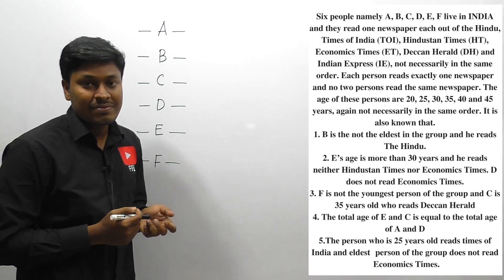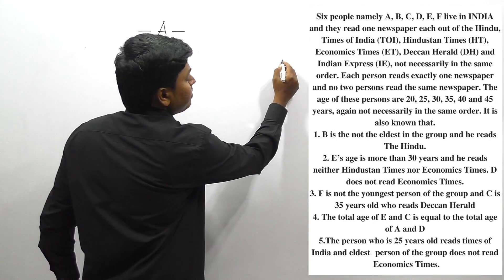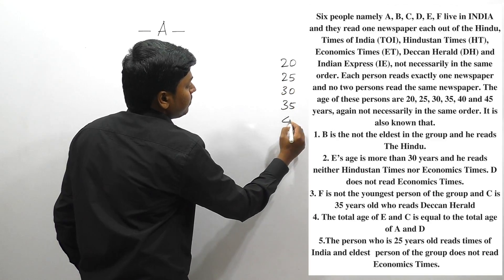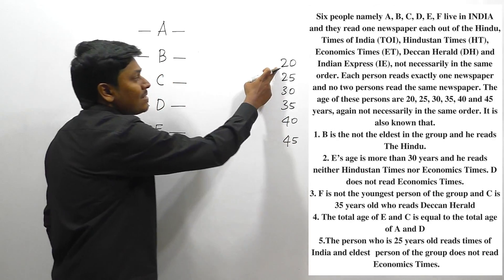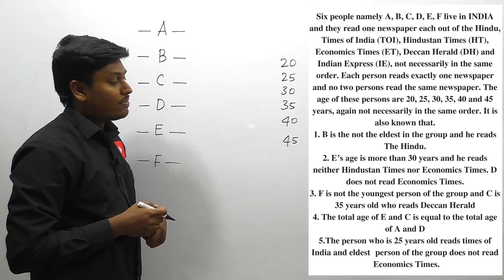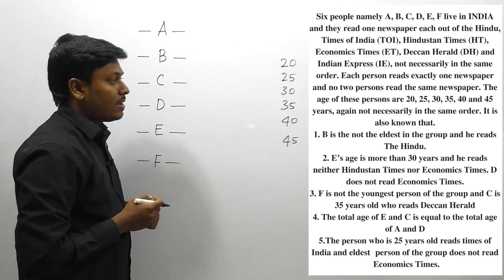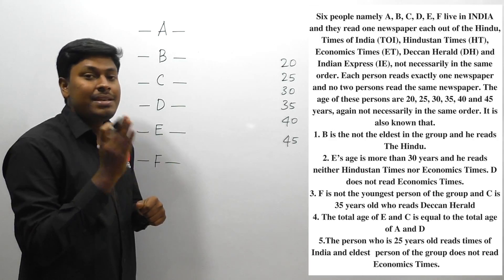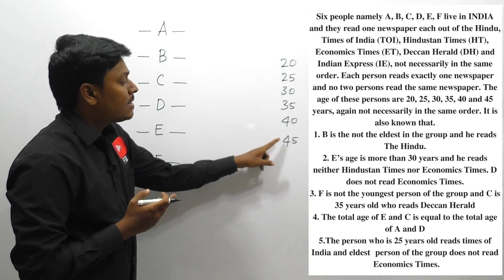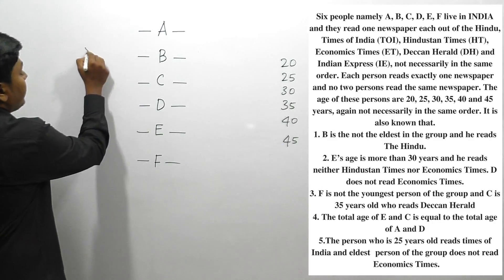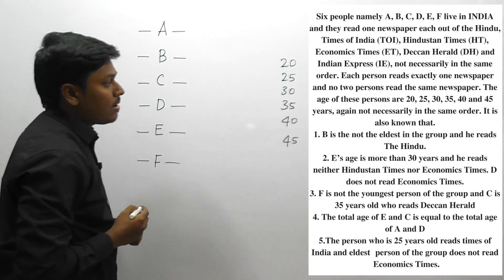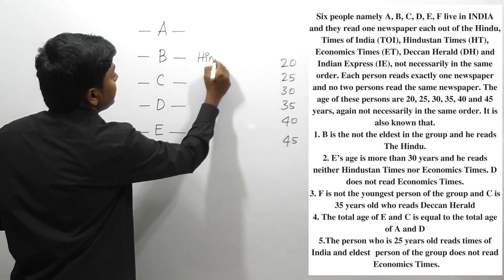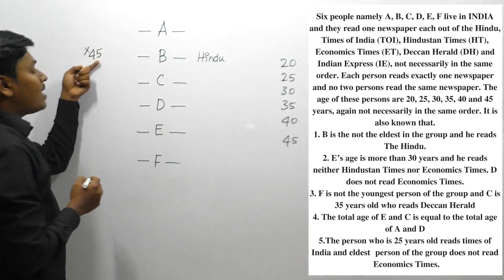The age of the person starts from 20, 25, 30, 35, 40, and 45, so the youngest age will be 20 and the eldest age will be 45. Moving to the first clue: B is not the eldest. If person B is not the eldest, then B's age will not be 45. Also, person B reads a newspaper, but B is not the eldest person.